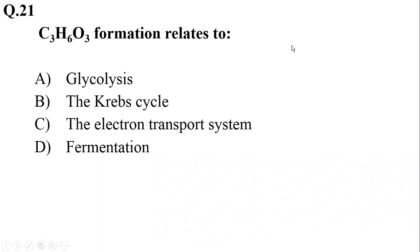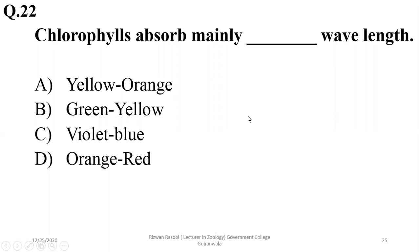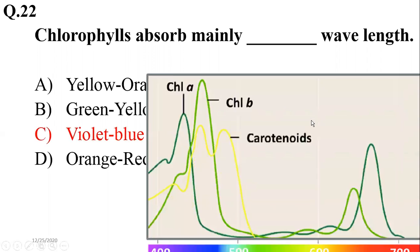So we go for option B here. Question 21: C3H6O3 is the lactic acid formula and its formation is related to the fermentation process or lactic acid fermentation, so the answer is delta. Question 22: Chlorophyll absorbs mainly in the violet and blue region.